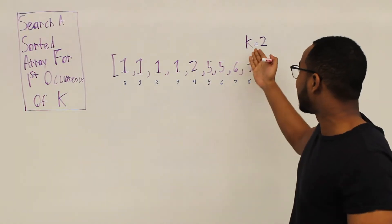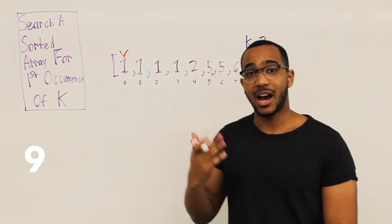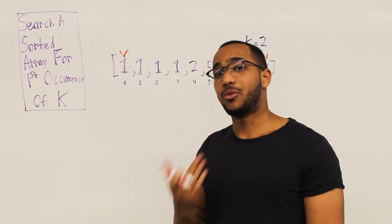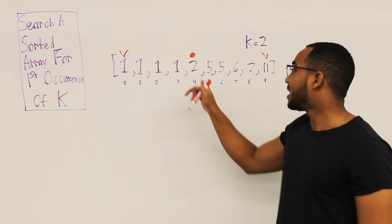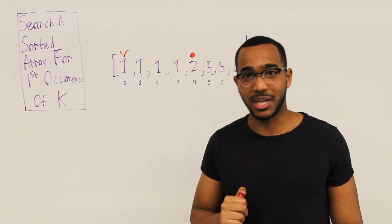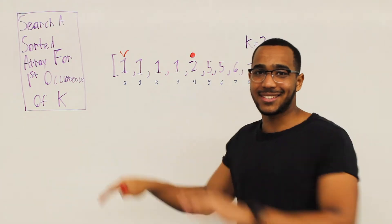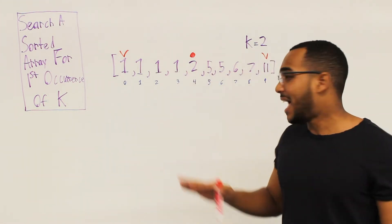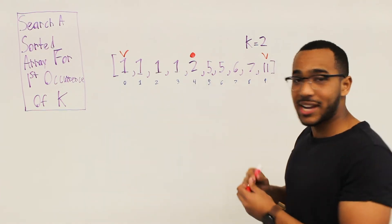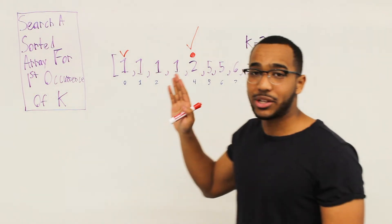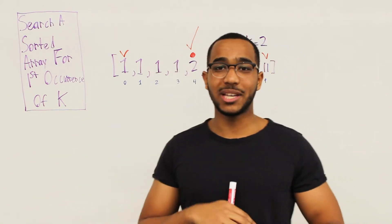What if we had a different element at the start? Let's look at the case where k is 2, searching for the first occurrence of 2. I set my bounds, compute the midpoint — 0 plus 9 divided by 2 truncated to 4 — and I'm pointing at 2. Is this the first occurrence? I look at the element to my left. It is not the same as me. The array is sorted, so if the left neighbor is less than me, there are no more twos to my left. I'm finished — I've found the first occurrence of k. That check is just a constant time operation.